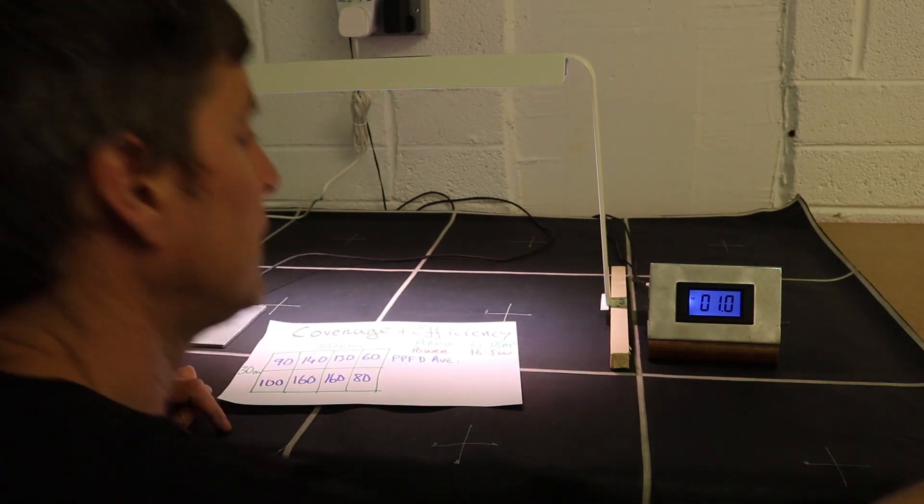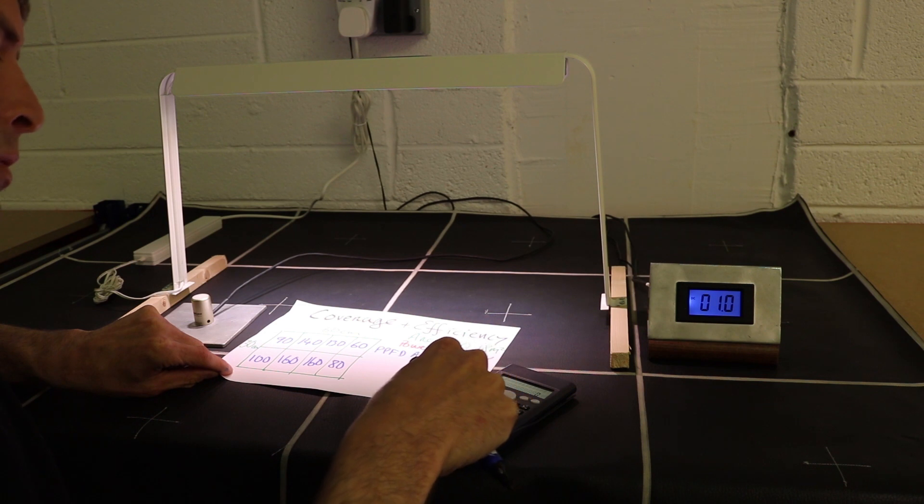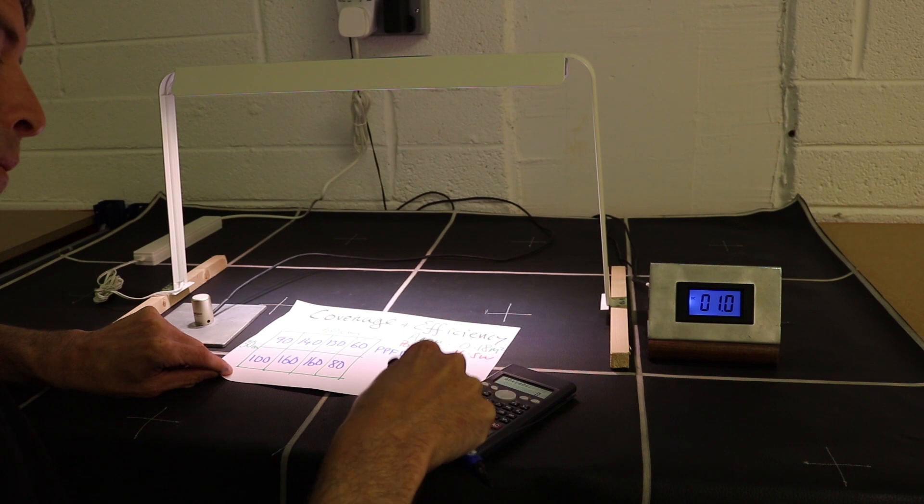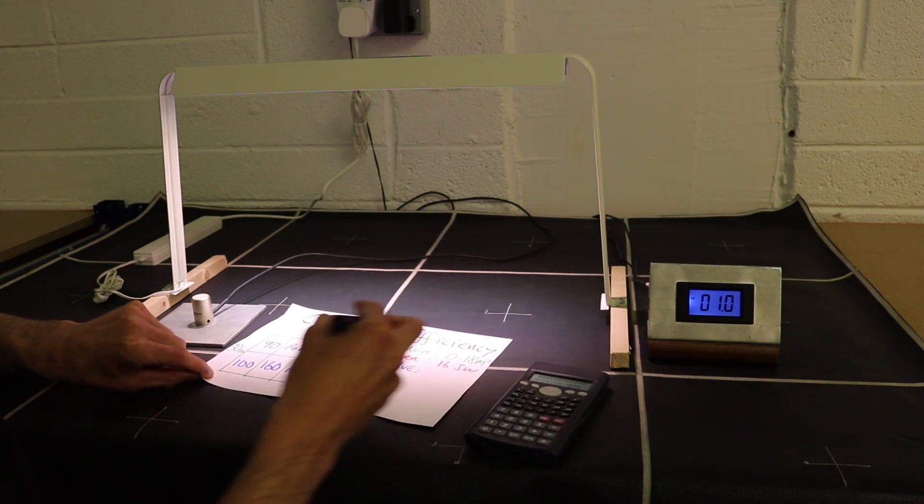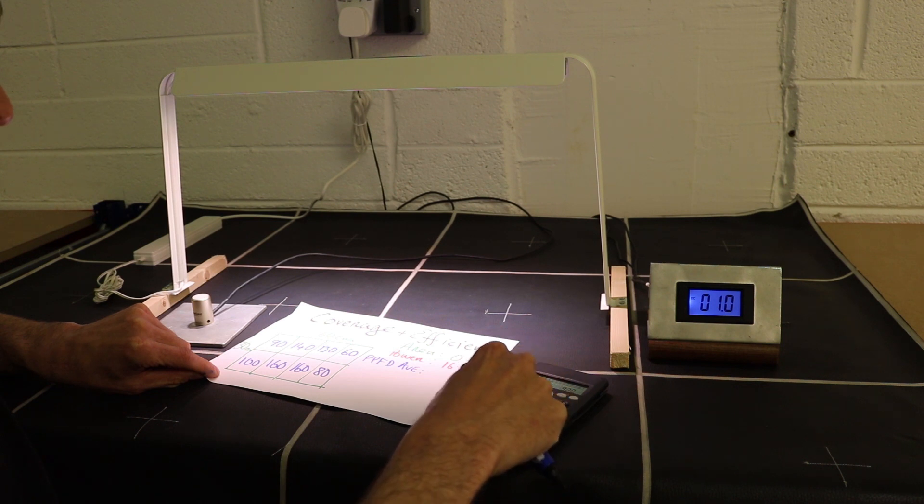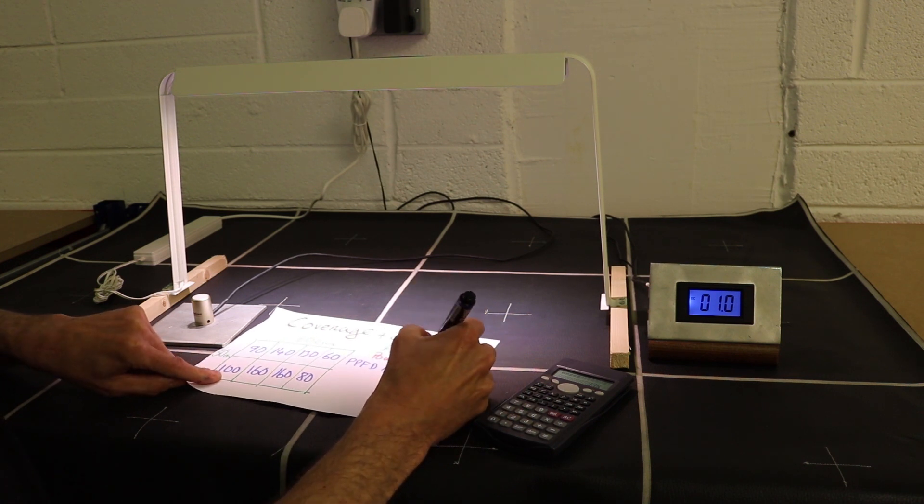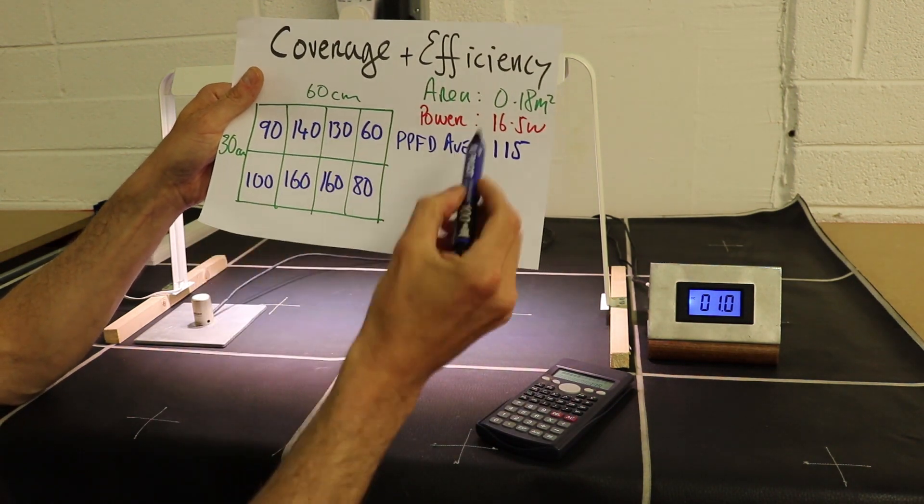So let's work out the total. We're adding them all together and dividing by the total amount. So that's 920 is the total amount and we divide that by eight, the number of measures taken. The PPFD average is 115.